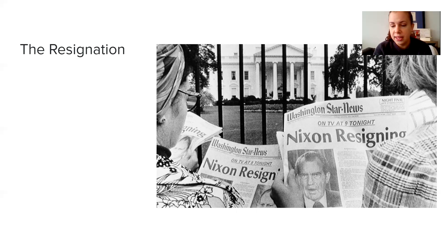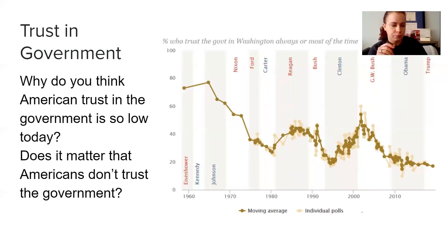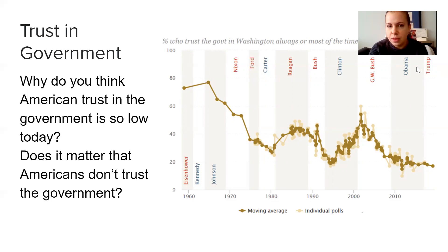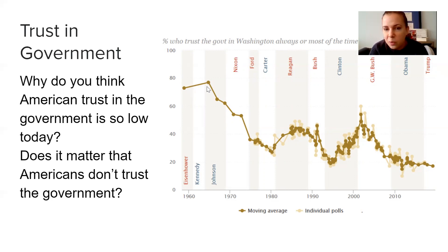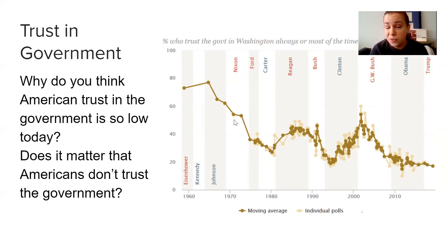Now we are going to look quickly at the long-term consequences. If you look at this graph, you can see the percent of people who trust Washington — meaning the government — always or most of the time. Between Eisenhower and Johnson it doesn't really go below 70%; people are pretty trusting of the government at this time. However, during the Nixon administration from 1970 to 1973, it drops to almost 50%, and then with Watergate it drops below 40%.